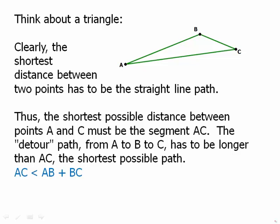The detour path from A to B to C has to be longer than AC because AC, by definition, is the shortest possible path. Therefore, it must be true that that detour path, AB plus BC, has to be longer than AC. And we can say the same analogous thing for the other pairs of sides. That AC plus BC has to be bigger than AB by itself, and AB plus AC has to be bigger than BC by itself.